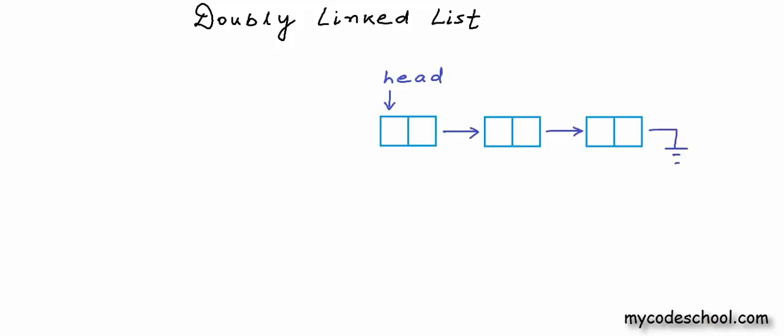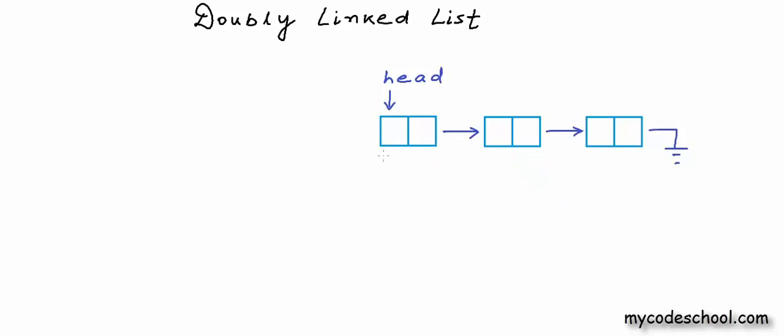In our lessons in this series so far we have discussed linked lists quite a bit. We have seen how we can create a linked list and how we can perform various operations with linked lists. Linked lists, as we know, are collections of entities that we call nodes. So far in all our implementations, we have created linked lists in which each node would contain two fields: one to store data and another to store the address of the next node.